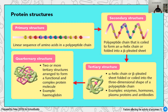The secondary structure is still a polypeptide chain, but instead of being straight it is now coiled. It can be coiled into two forms: either an alpha helix chain, or it can be folded into a beta pleated sheet. That is why it is called the secondary structure.